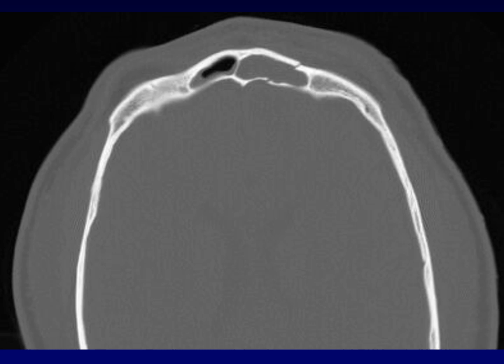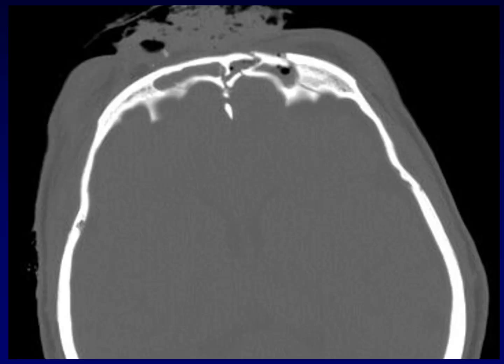Here's an example of a non-displaced fracture extending through the left frontal sinus. You can see that both the anterior table and the posterior table are involved, with blood filling the sinus, but there's only minimal displacement of the fragments. Here is a more complex fracture where there are displaced fragments of both the anterior and posterior table of the frontal sinus.